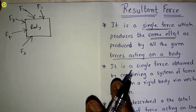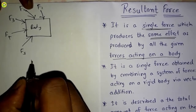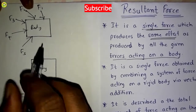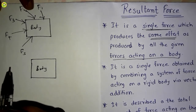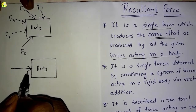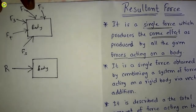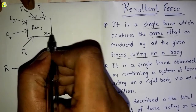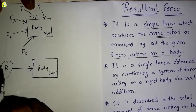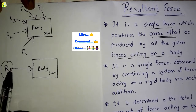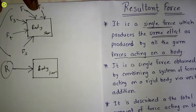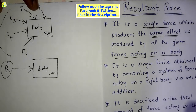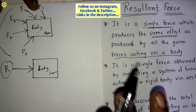Now suppose this is the same body again. The same effects produced by all those forces — like deformation, motion, or retardation — will be produced by a single force. This single force is the resultant force, which produces the same effect as produced by all the given forces acting on a body.